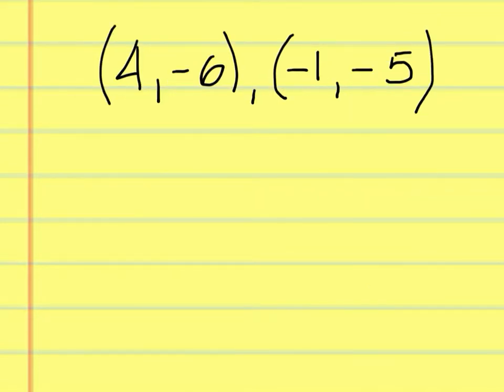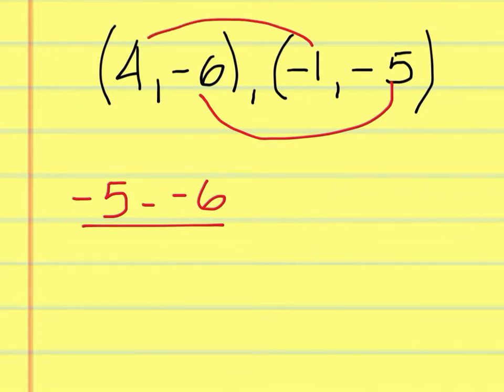To find the slope given these two points, you would do negative 5 minus negative 6, and then negative 1 minus 4. That would give you 1 over negative 5, which is really negative 1 fifth.